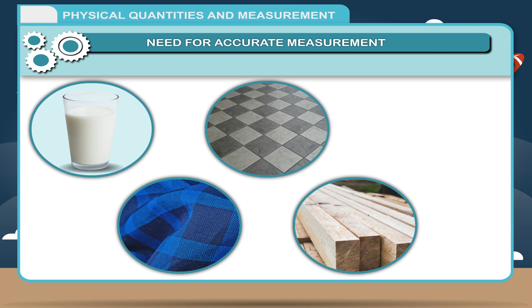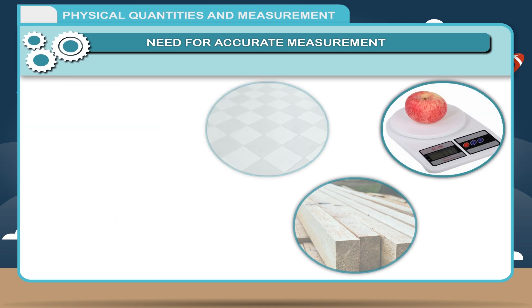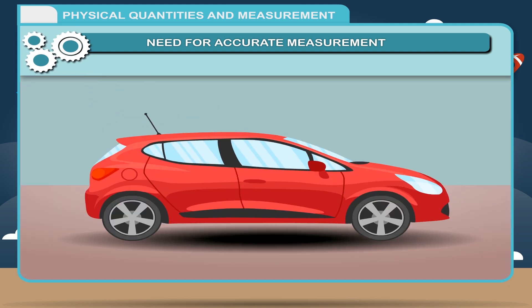In the same way, each and every component of a machine should have high degree of accuracy of measurement. What would happen if each part of a machine has its own standard of measurement? Components of a machine are manufactured at different places. If each component is different in measurement, there will be a difficulty in assembling the machine.